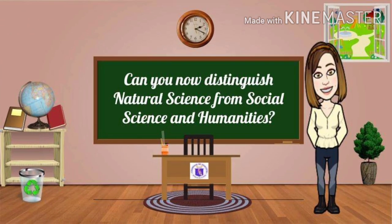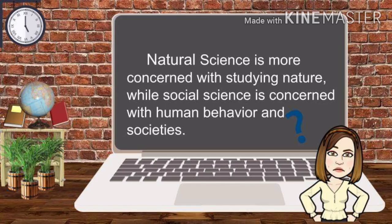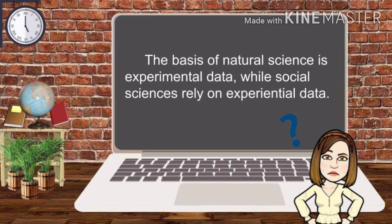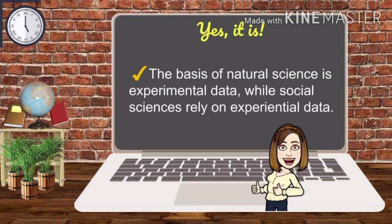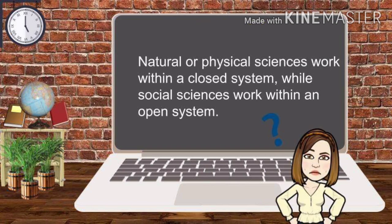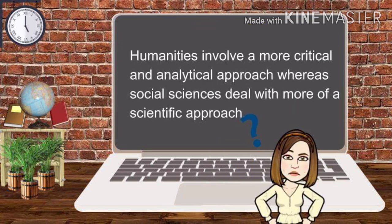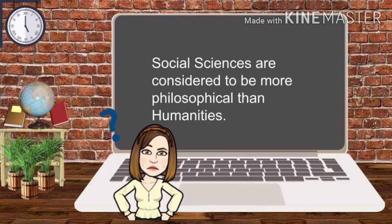Can you now distinguish natural science from social sciences and humanities? Let's answer some questions. Going through the questions, the answers are confirmed correct. And one final question: are social sciences considered to be more philosophical than humanities?